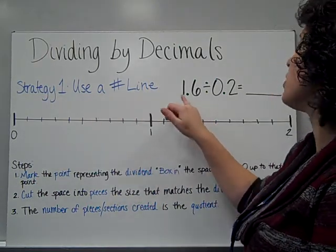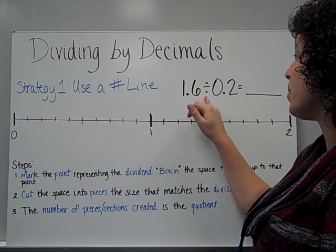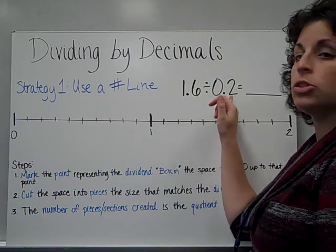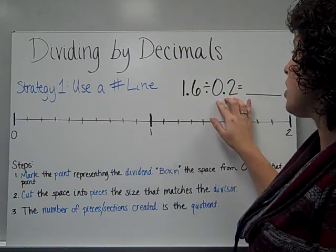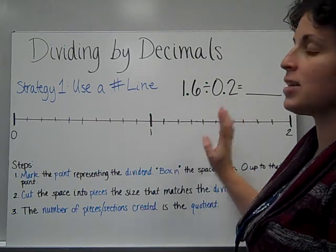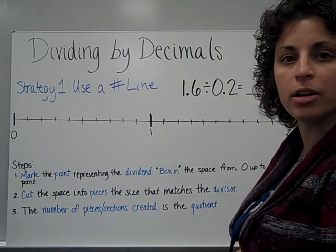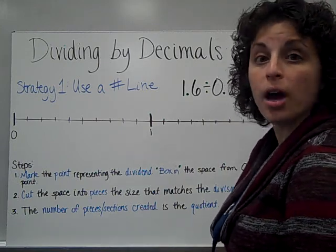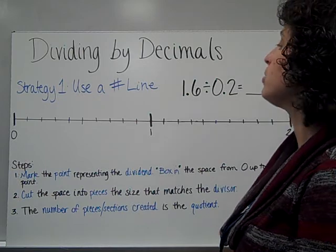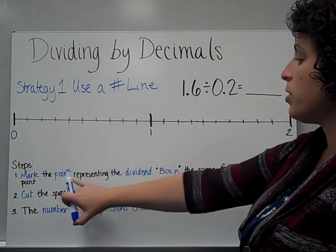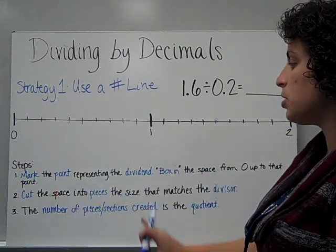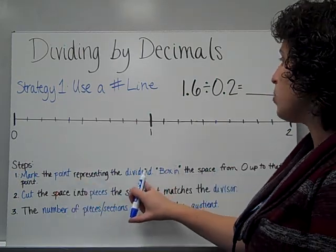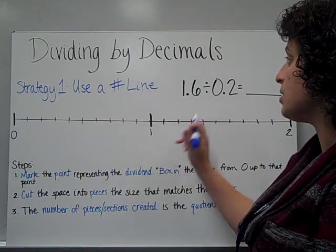Our problem is 1 and 6 tenths divided by 0 and 2 tenths. Because we're dividing by a decimal, our regular division strategy and algorithm will not work. So the first thing I'm going to do is mark the point on the line represented by the dividend.